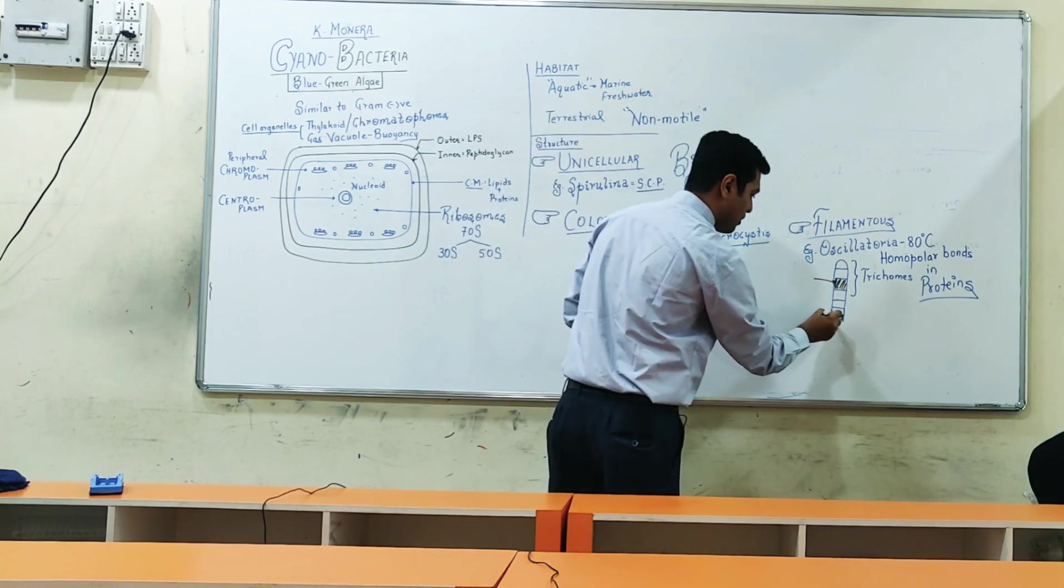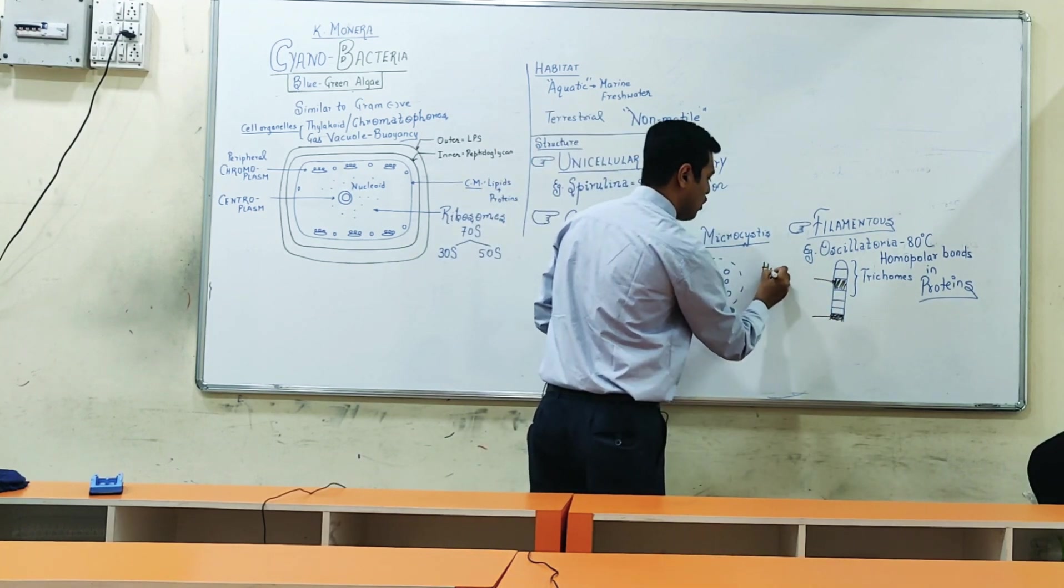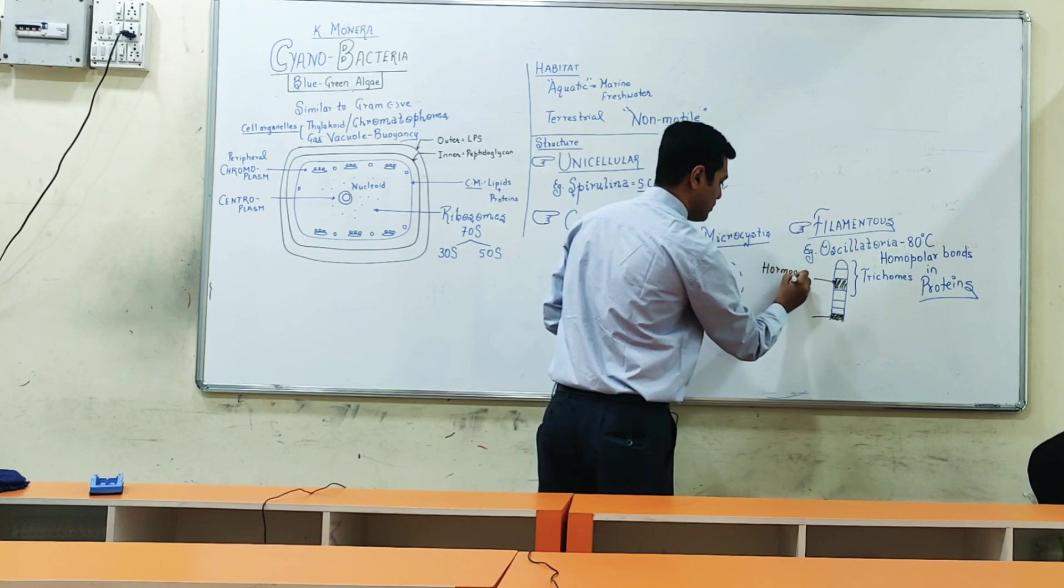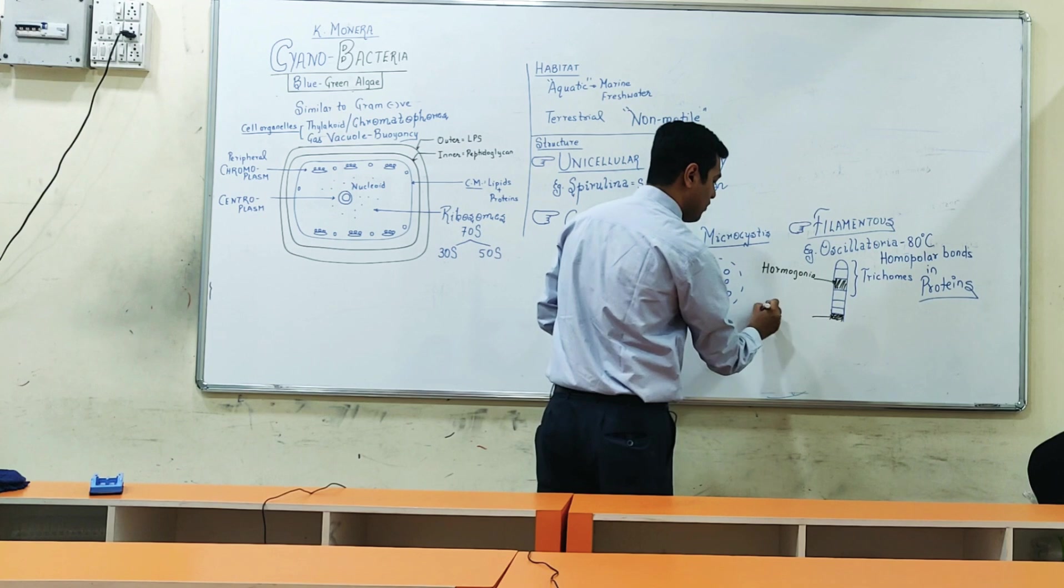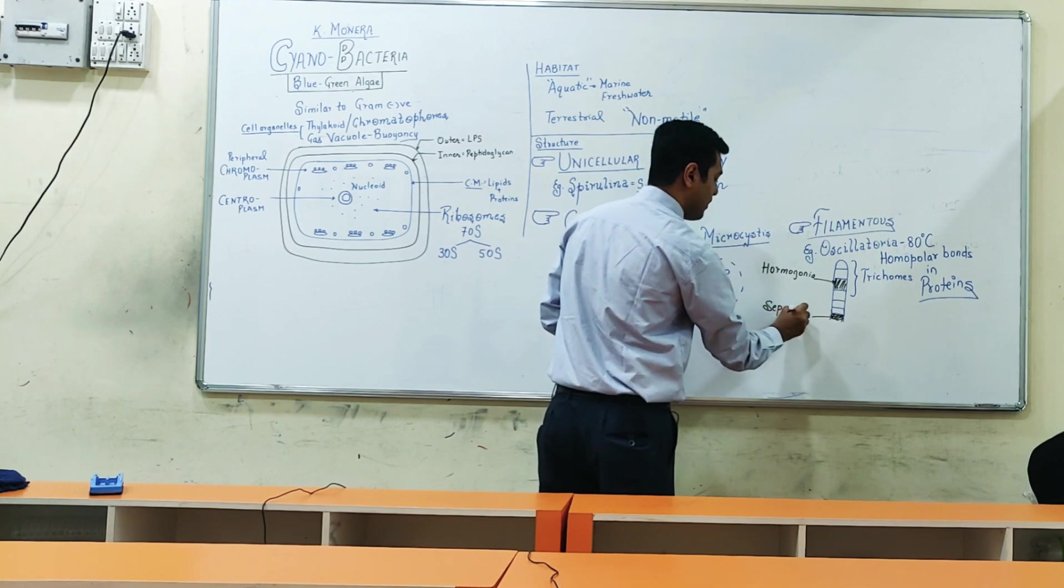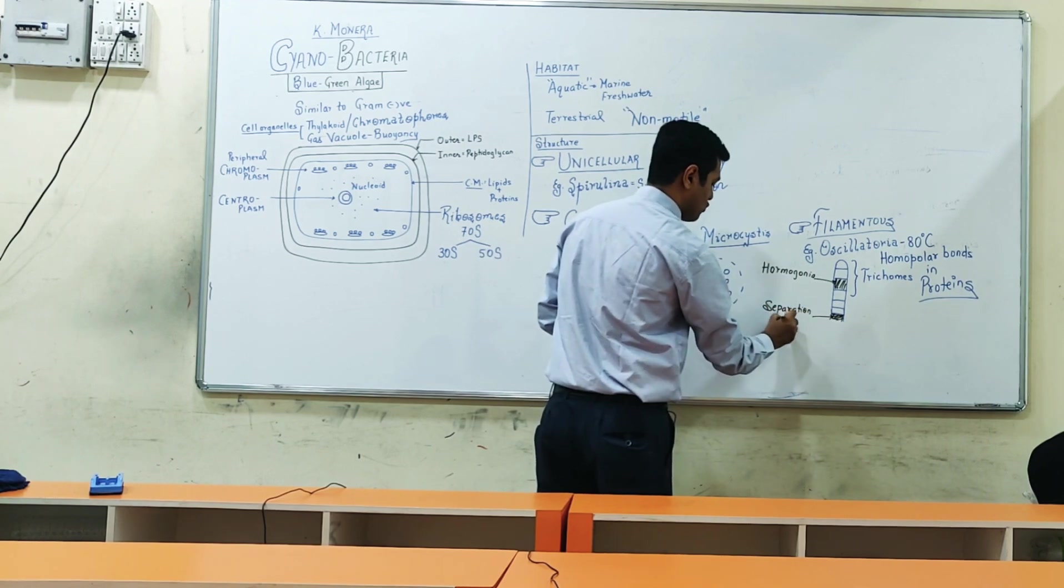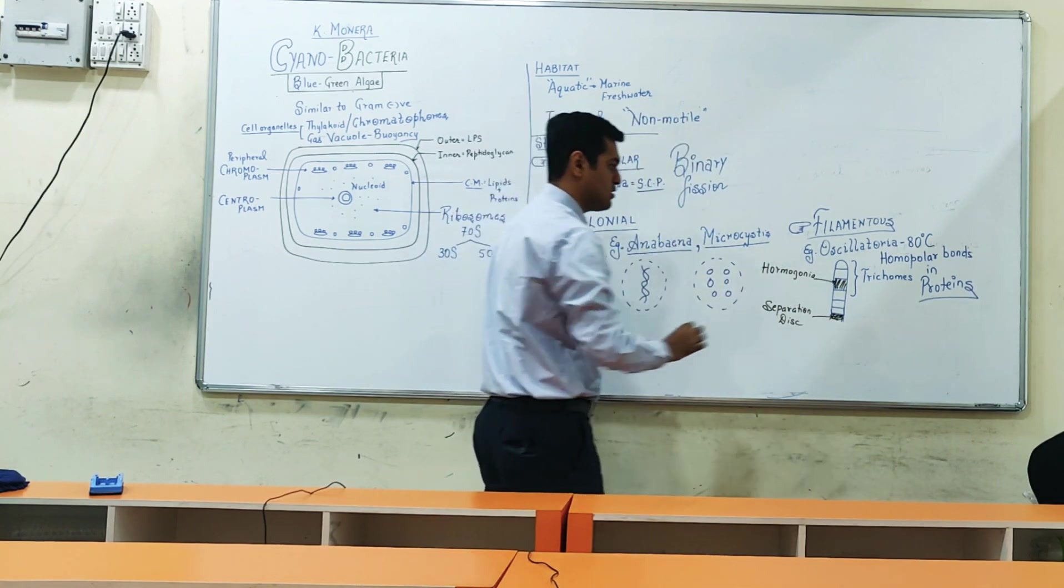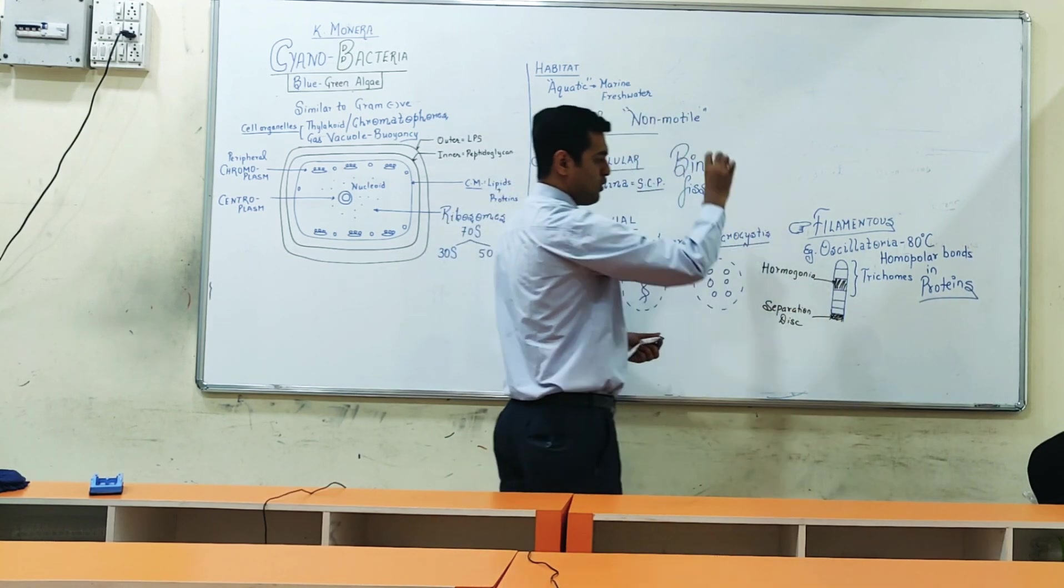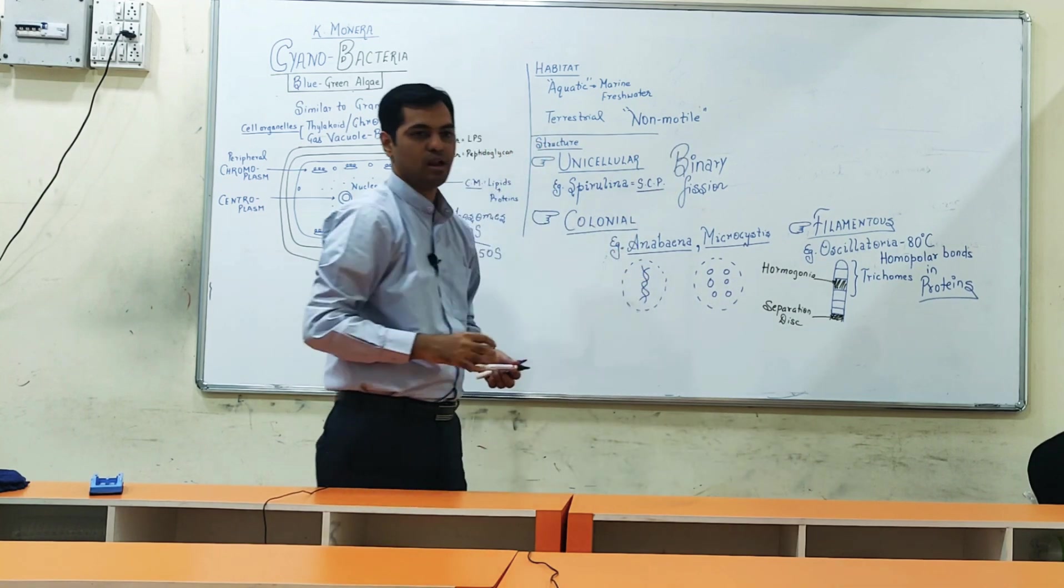So these structures which are formed are known as hormogonia formation, or they are also known as separation disks. Through these structures, fragmentation of particular filaments can occur and numerous such filaments can be mitotically developing.